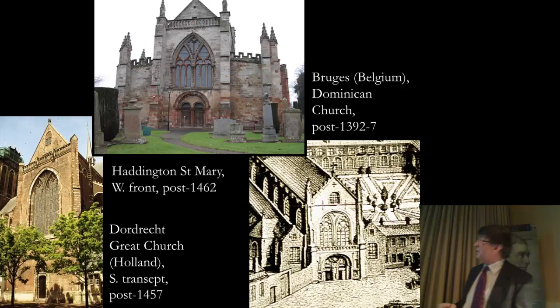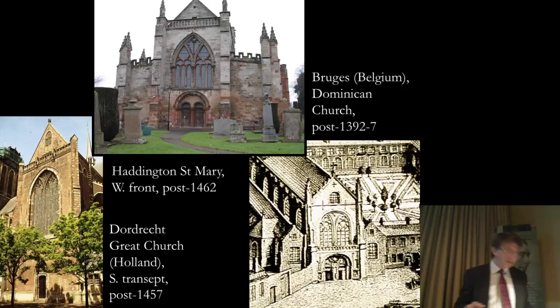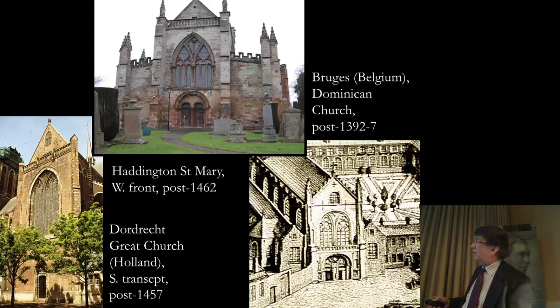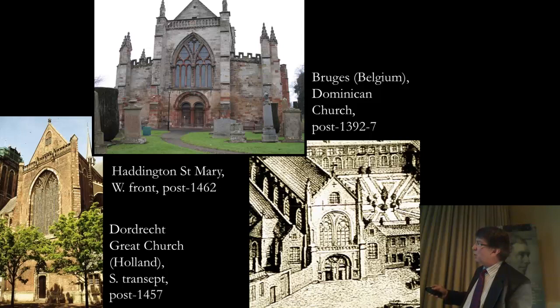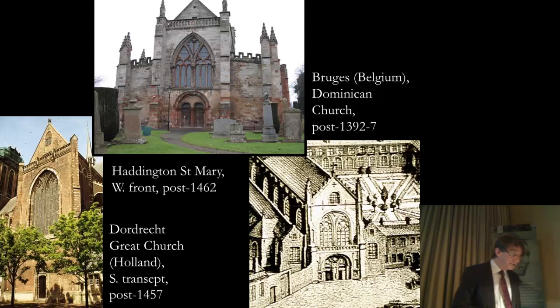The links with the Low Countries become rather more clear when you look at the overall design of the West Front at Haddington. Just compare it with something like the transept at Dordrecht. Look at this window here, set back from the buttresses on either side, with massive sub-arches within the tracery field and gables set back behind this tracery parapet at the top - an awful lot of the same elements as we see at Haddington. But I think probably one of the closest comparisons is this fragmentary remains of a church in Bruges. Here you've got the round-arched door, these round-arched openings to the door itself carried on a trumeau, and the window subdivided by massive sub-arches.